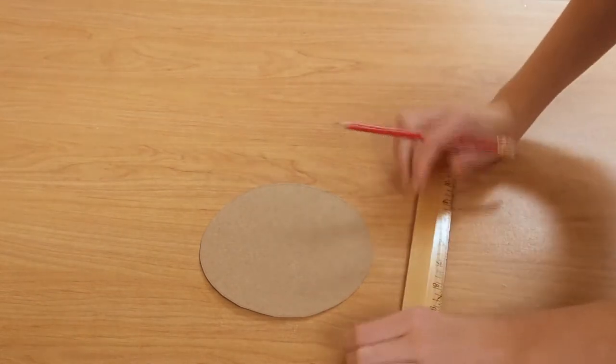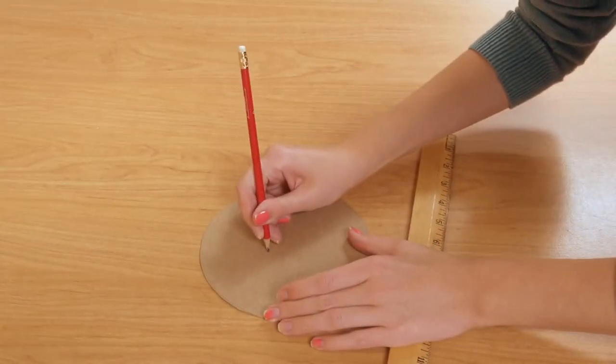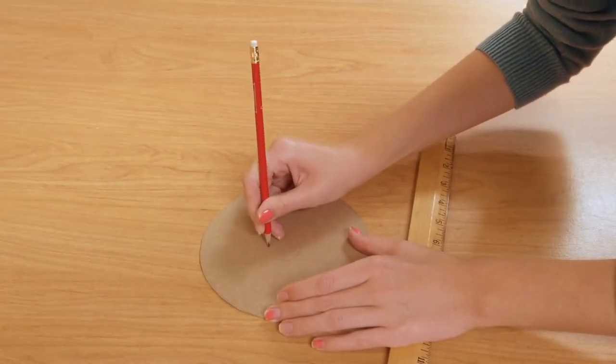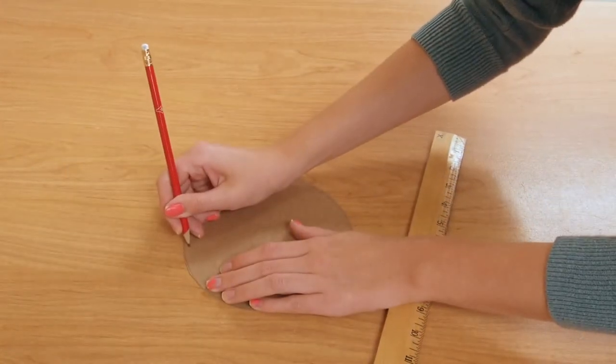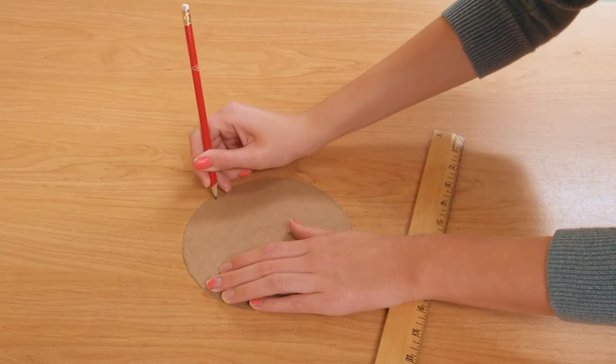Next, draw a small circle in the center of the already cut circle and then draw a larger circle around the inner edge of the cutout. For the outer circle, leave about a centimeter of space between the edge and the line you are drawing.